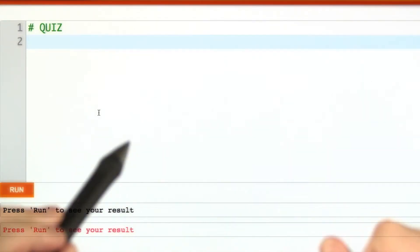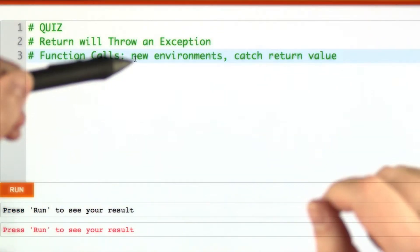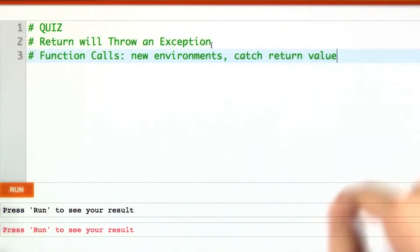So we just saw how, when evaluating statements like a return statement, we could throw an exception. Now we're in a great position to code up function calls, which will have to set up a new environment and catch the return values.